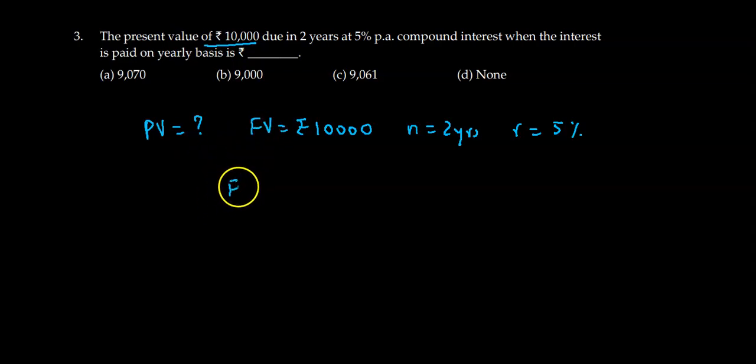We know that the future value is given by PV, that is present value into 1 plus R upon 100 raised to N.